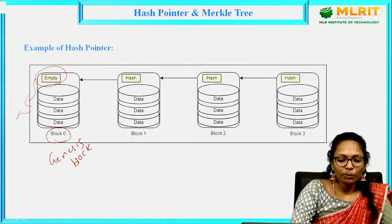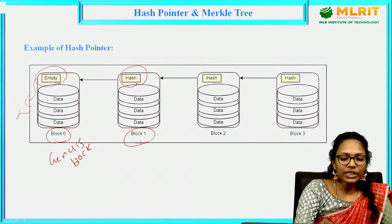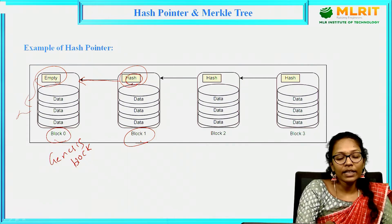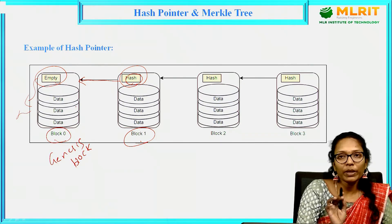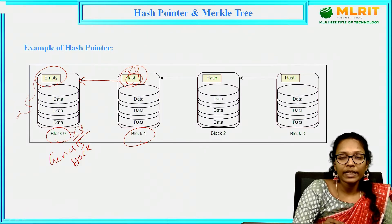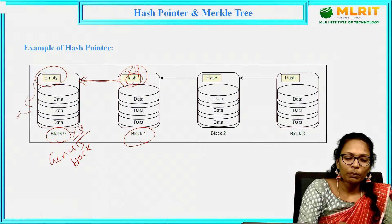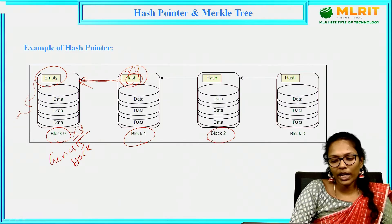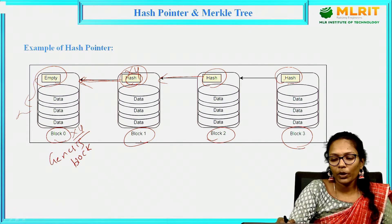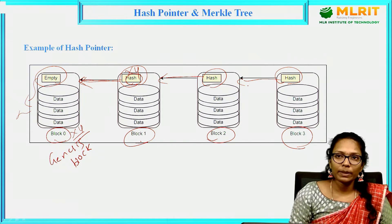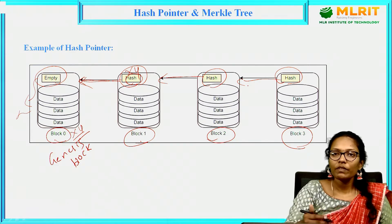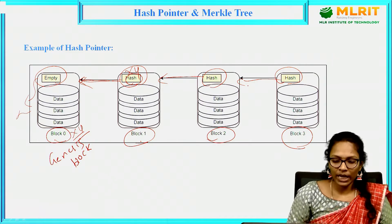Coming to block 1 — for block 1, the hash pointer is pointing to the previous block, so it contains the address or the hash value of the previous block. For example, if the hash value of the previous block is X Y, then it will contain X Y and this pointer will point to the previous block. The same way, block 2 hash pointer will point to block 1, and block 3 hash will point to the previous block that is block 2.